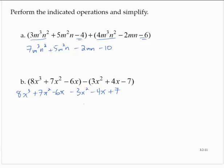And now combining any like terms, I would have 8x cubed that doesn't combine with anything, plus 7x squared minus 3x squared, that's a plus 4x squared. Minus 6x minus 4x, that's minus 10x. And then plus 7.